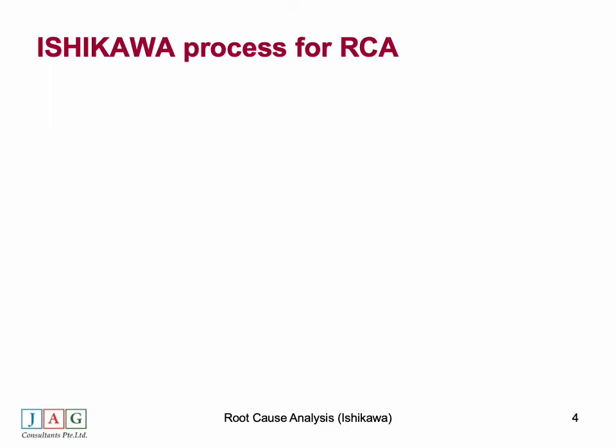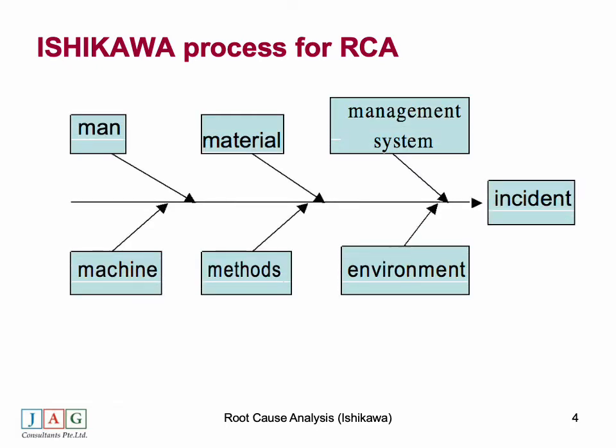The Ishikawa process is a well-acclaimed and proven method to assess root cause, provided it is conducted by a team of at least two or more persons in a brainstorming session — the more people, the better, to get different viewpoints. The root cause could lie in the man, the material, the management system, the machines, the methods such as procedures and checklists, or the work environment.